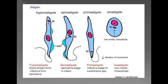Before coming to Trypanosoma, let's discuss the four morphological forms of these Haemoflagellates, which are divided according to the position of the flagellum. The first one is Amastigote. 'A' means absent and 'mastigote' is derived from the word 'mastix', meaning whip. So absence of flagellum is the Amastigote form. It is non-motile and always an intracellular form.